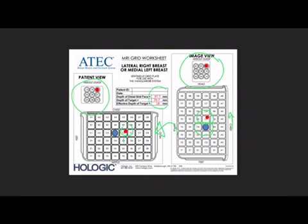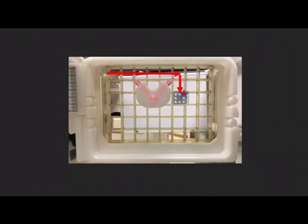Then you just convert it here to the needle guide using their worksheet. You can see I've calculated my depth of distal grid face, my depth of target, subtracted the two to come up with 18 millimeters, which is almost exactly the same as I measured on the transaxial images. After you've done your manual targeting, everything else is going to be the same.